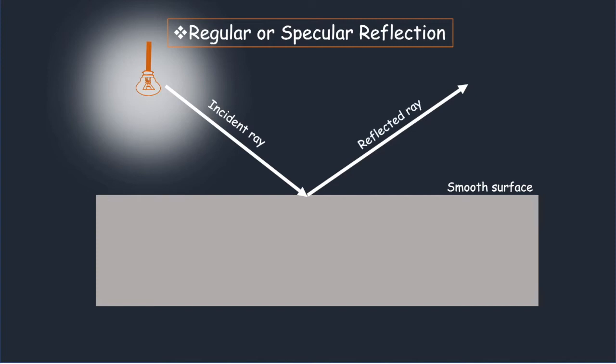Note that at the point where the incident ray meets the smooth mirror, a straight line can be drawn perpendicular to the surface of the mirror. This line is called the normal. Now, the angle that the incident ray makes with the normal is called the angle of incidence, while the angle that the reflected ray makes with the normal is known as the angle of reflection.